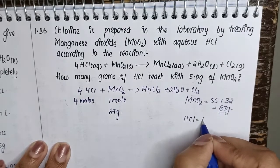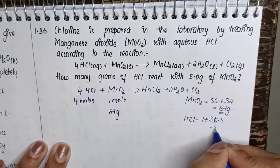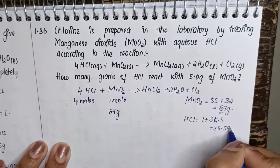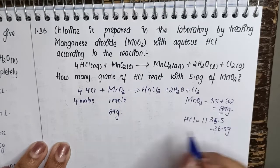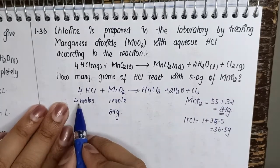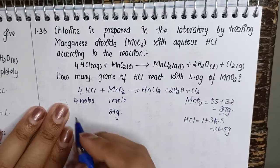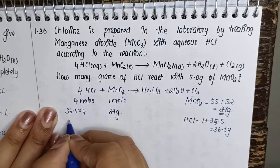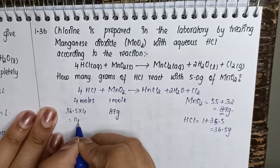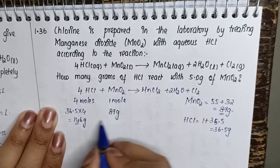Now similarly for HCl, HCl is 1 plus 35.5, which is equal to 36.5 grams, which is the molecular mass of HCl. But here we have not 1 mole but we have 4 moles. So therefore it is going to be 36.5 into 4, which will be equal to 146 grams.